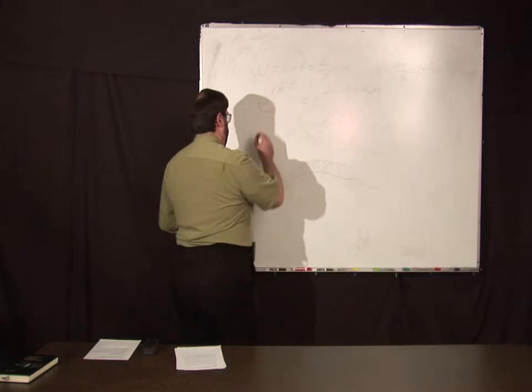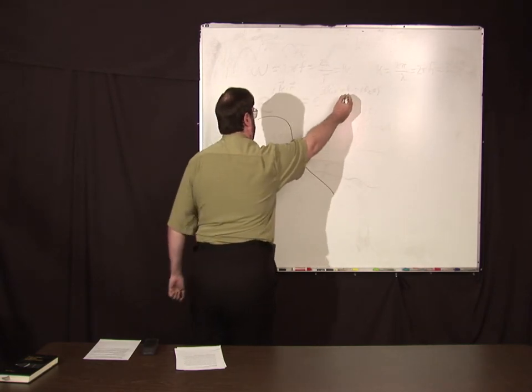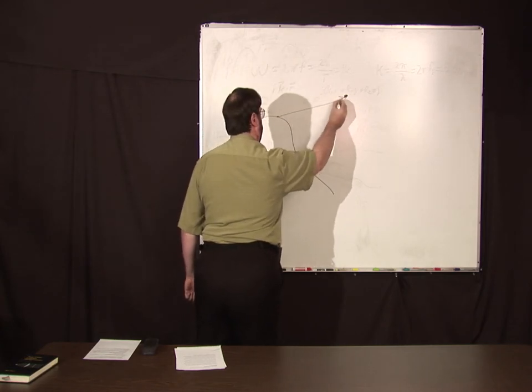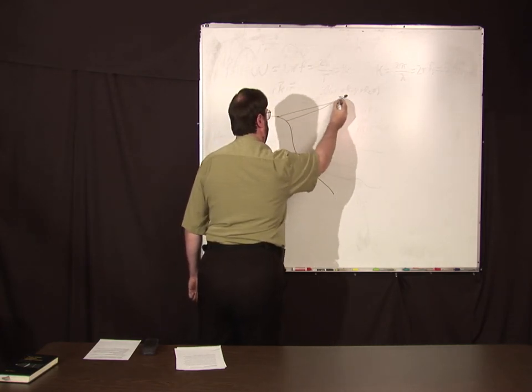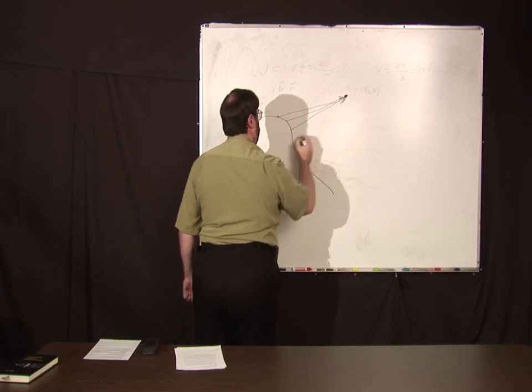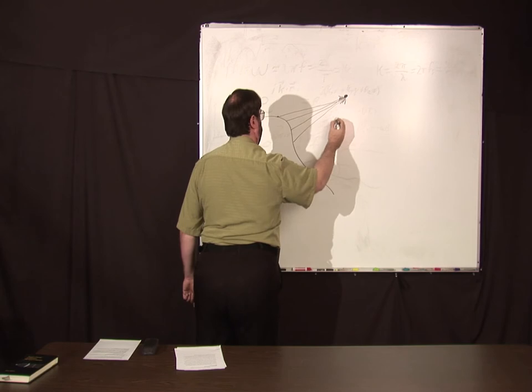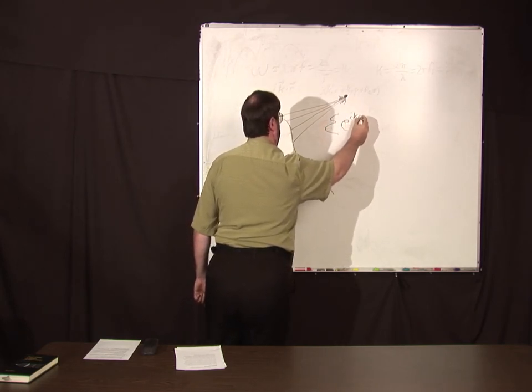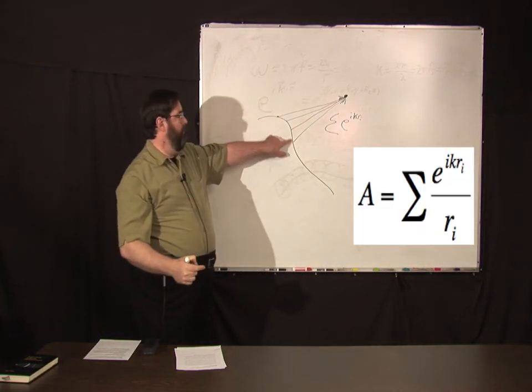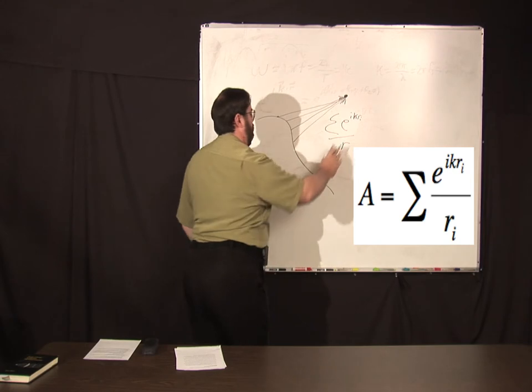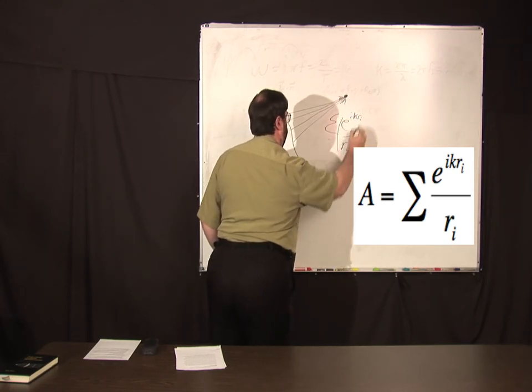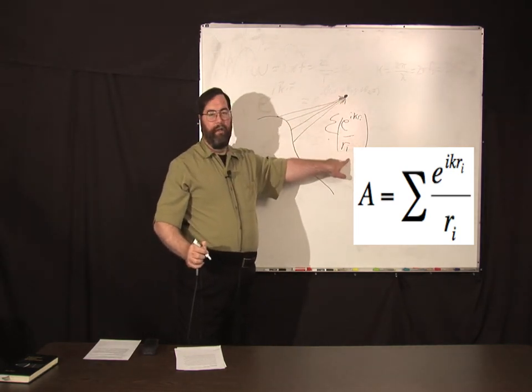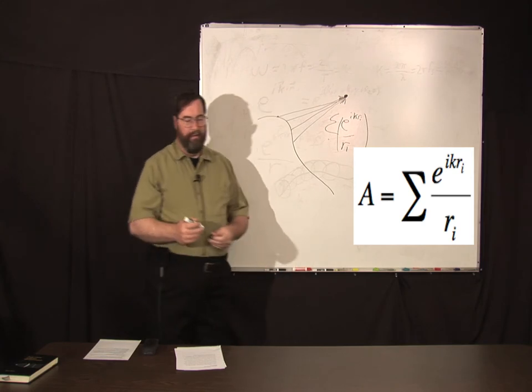So that if you have some wavefront and you had some point in space, you could sum up all these spherical waves coming from the wavefront for that particular point. So this is going to be a sum of things that look like e to the ikri over ri.